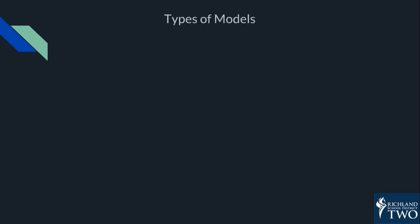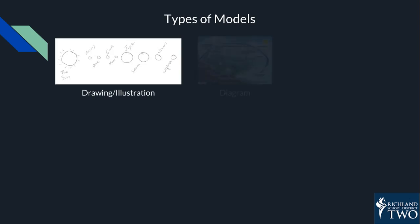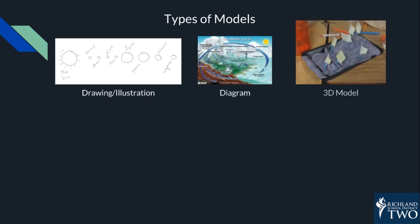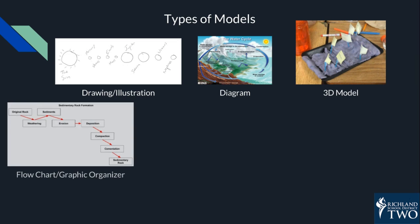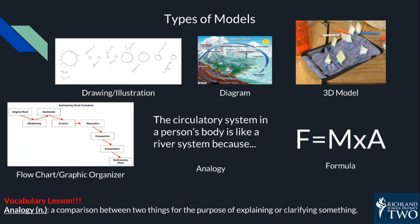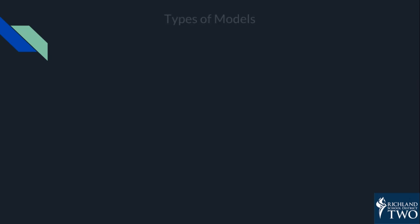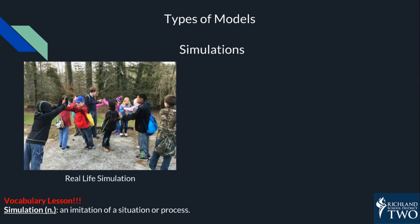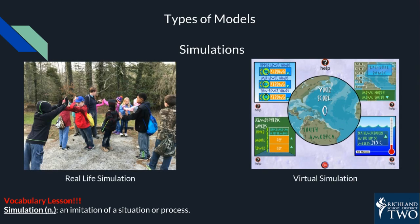There are lots of different types of scientific models. Drawings and illustrations, diagrams, actual 3D models, flowcharts and graphic organizers, analogies, and formulas are all different types of scientific models. Another way of modeling is through simulations, where you can either act out a process in real life or virtually on a computer.